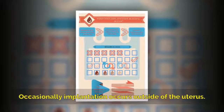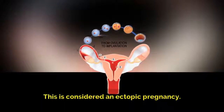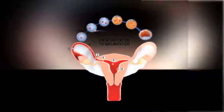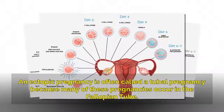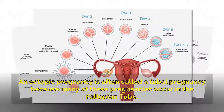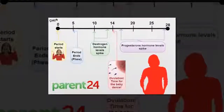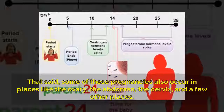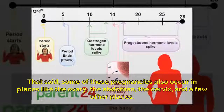Occasionally implantation occurs outside of the uterus. This is considered an ectopic pregnancy. An ectopic pregnancy is often called a tubal pregnancy because many of these pregnancies occur in the fallopian tube. That said, some of these pregnancies also occur in places like the ovary, the abdomen, the cervix, and a few other places.